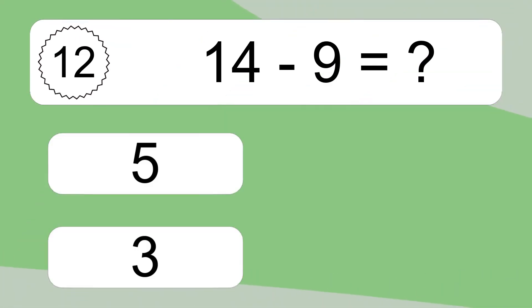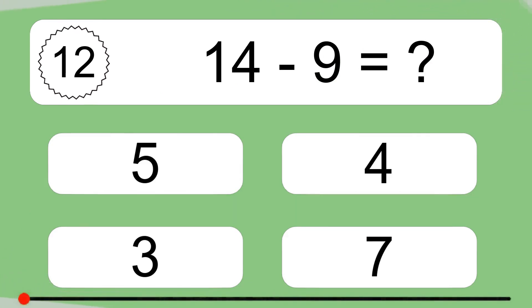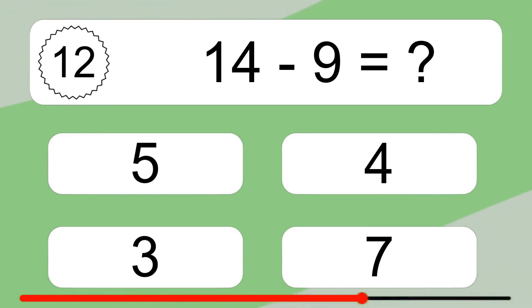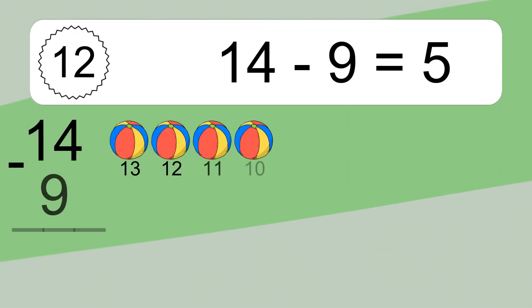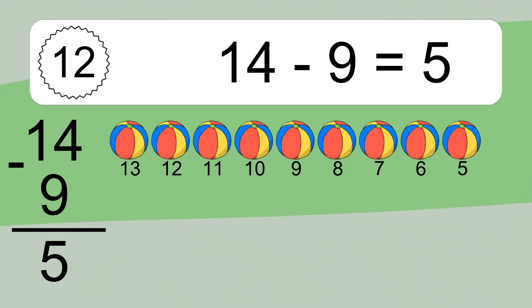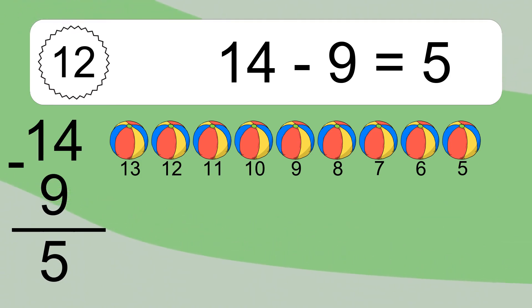14 minus 9 equals what? 14 minus 9 equals 5. Let's count it. 13, 12, 11, 10, 9, 8, 7, 6, 5.